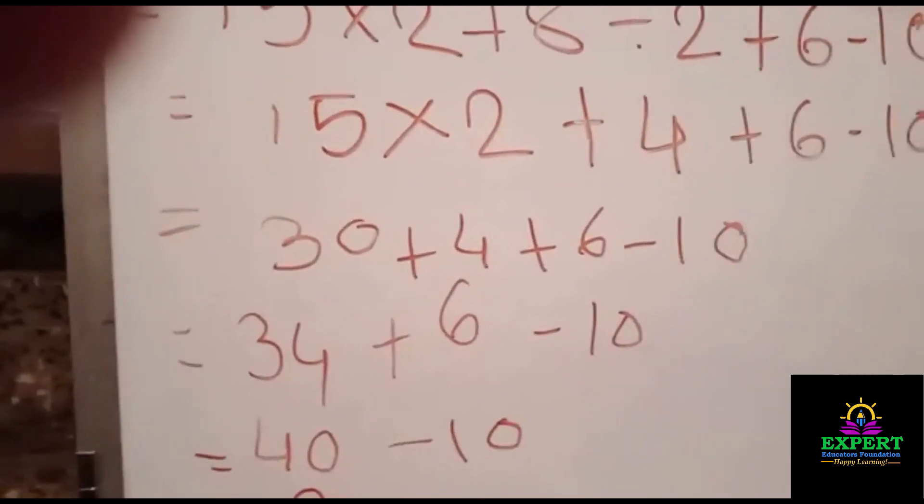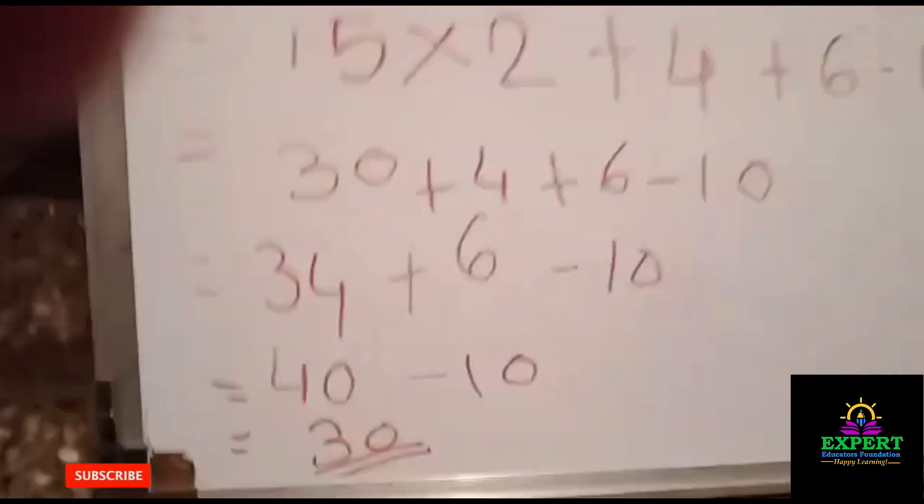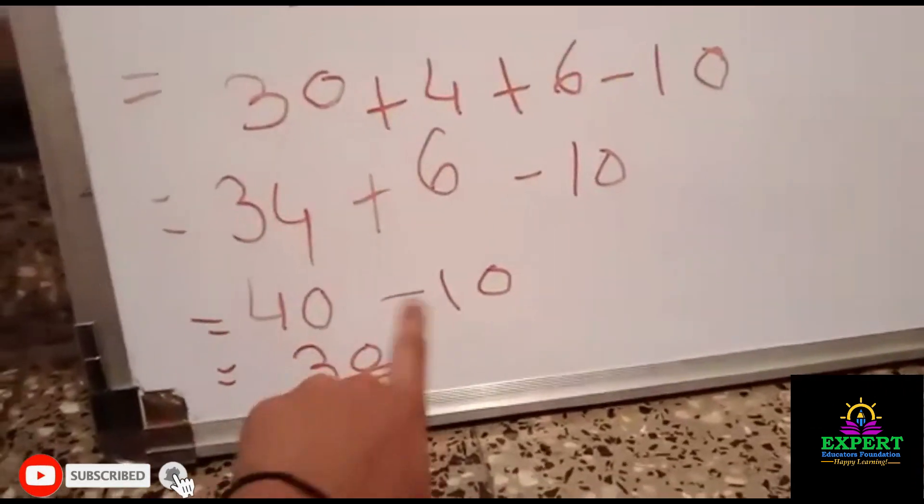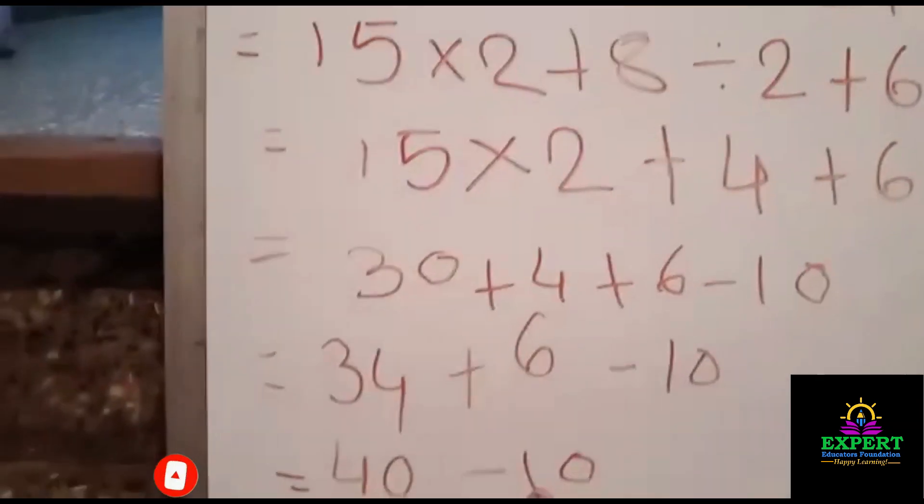So 40 minus 10 is equal to 30. So you will say how you done here subtraction. Last step was S. S means subtraction.